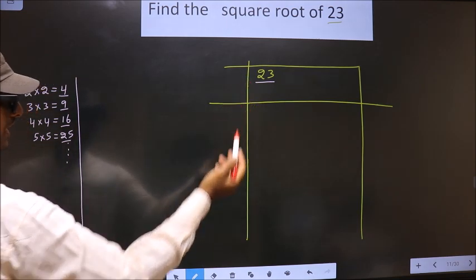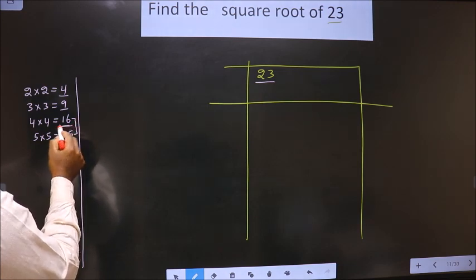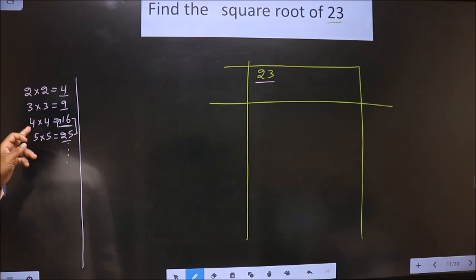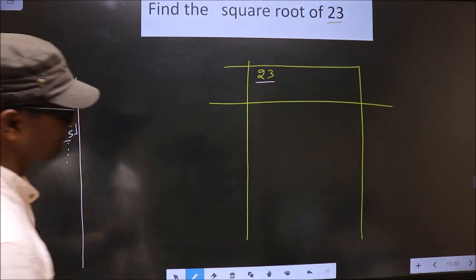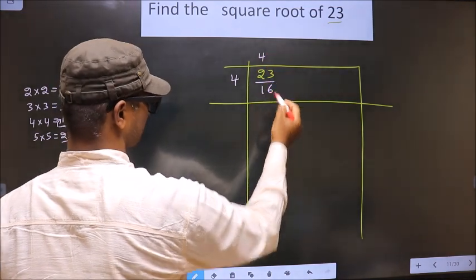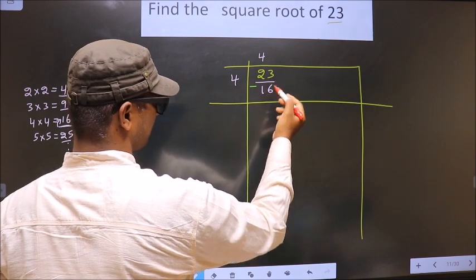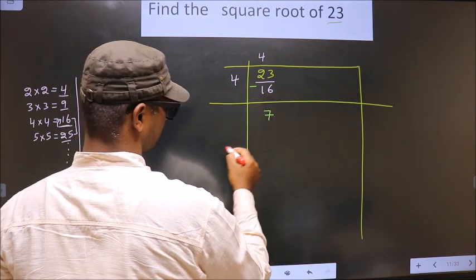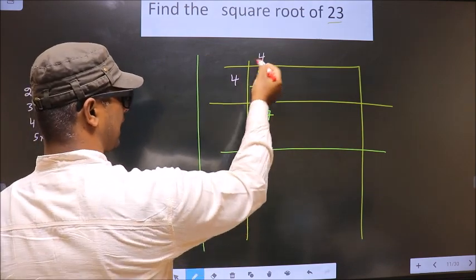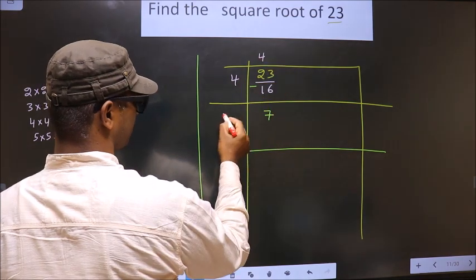Here we have 23. It lies between 16 and 25, so we take the smaller number, that is 16. Since 4 into 4 is 16, we take 4 here and 16 below. Now subtract: 23 minus 16 is 7. Now here we should add these two numbers and write: 4 plus 4 is 8.